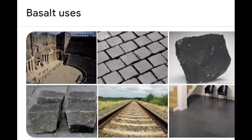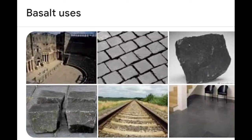Basalt is an example of igneous rocks. It is an extrusive volcanic rock that is grey in colour and is formed due to rapid cooling of lava. It is used as a road base or as concrete.